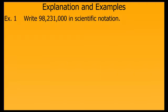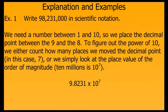Let's look at some examples. We want to write 98,231,000 in scientific notation. We need a number between 1 and 10, so we place the decimal between the 9 and the 8, giving us 9.8231. But now we need the power of 10 that will make this equivalent to 98,231,000. To figure that out, we simply count the number of places we move the decimal point from its original spot.